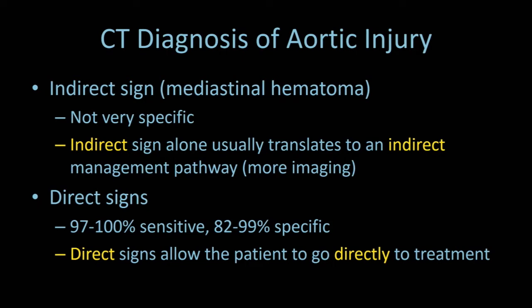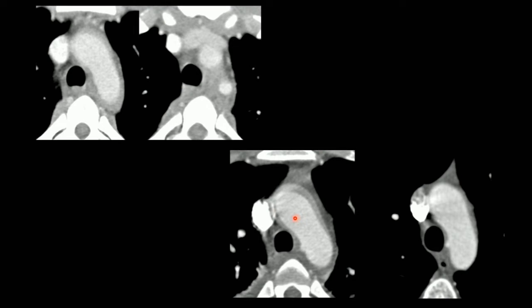When it comes to making the diagnosis, the indirect sign of mediastinal hematoma alone is not very specific and usually translates to an indirect management pathway, meaning more imaging. Direct signs are very sensitive and specific and allow the patient to go directly to treatment. This patient involved in a motor vehicle collision has blood around the aorta touching the great vessels, but no definite acute injury. At 48 hours, they've developed a small outpouching.